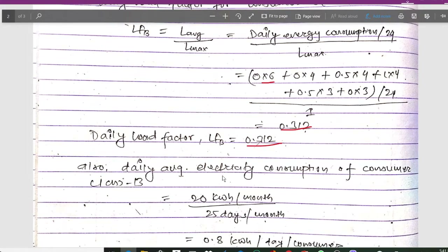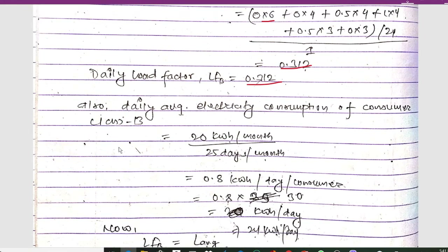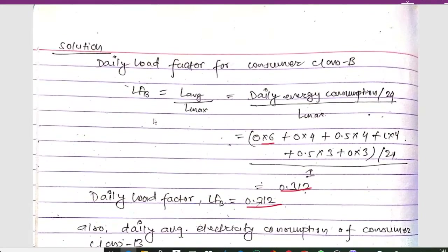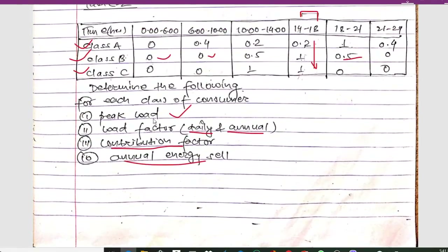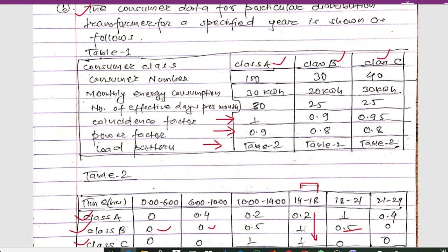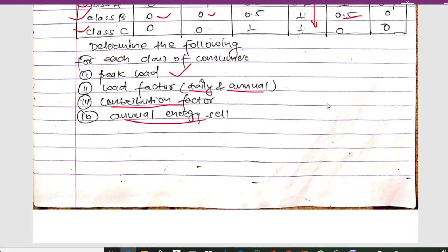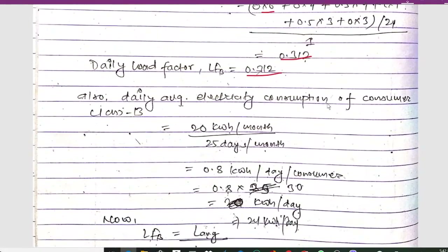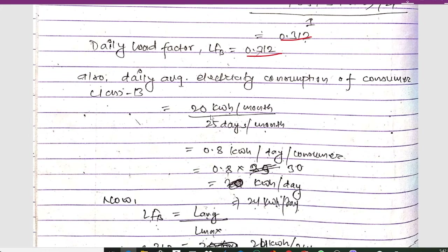The daily average electricity consumption for consumer class B: from the first table, monthly energy consumption for class B is 20 kWh and effective days per month is 25. So daily average consumption = 20 kWh/month ÷ 25 days/month = 0.8 kWh per day per consumer. With 30 consumers in class B, total = 0.8 × 30 = 24 kWh per day.